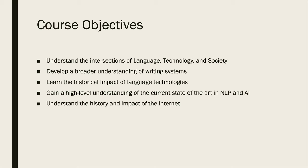There are a number of major course objectives that you are expected to learn by the end of this course. You will understand the intersections of language, technology, and society. You will have developed a broader understanding of writing systems. You will have learned the historical impact of language technologies. You will have gained a high-level understanding of the current state-of-the-art in natural language processing and artificial intelligence. Finally, you will understand the history and the impact of the internet.